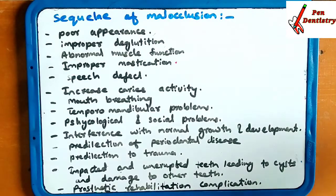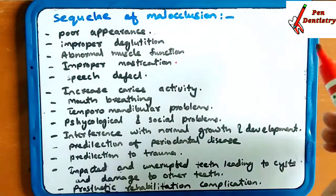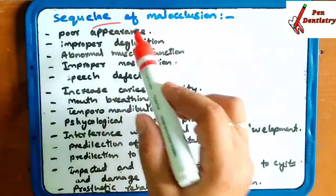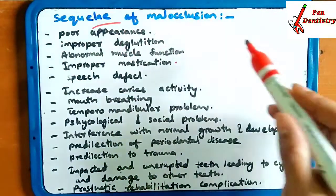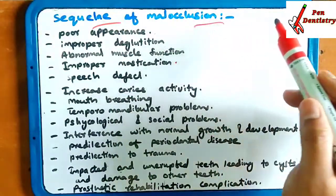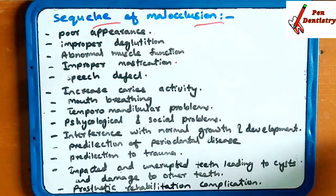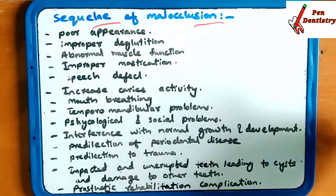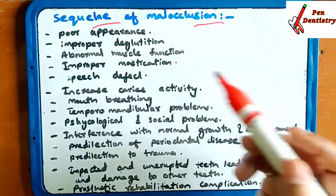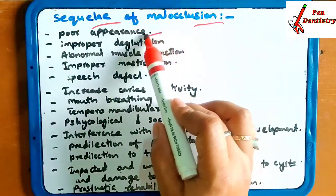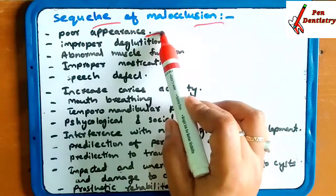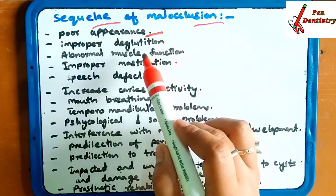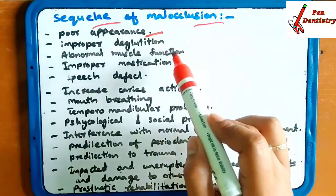Sequel of Malocclusion. What is Sequel? Sequel is what the patient feels and suffers from during the time of Malocclusion. The first one is poor appearance — due to the Malocclusion, the patient's appearance will be poor.